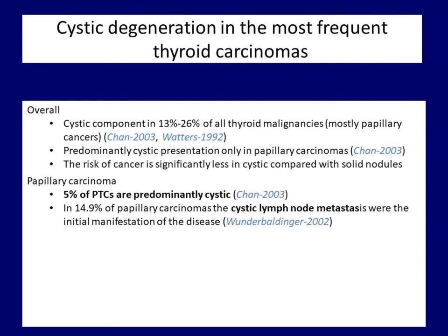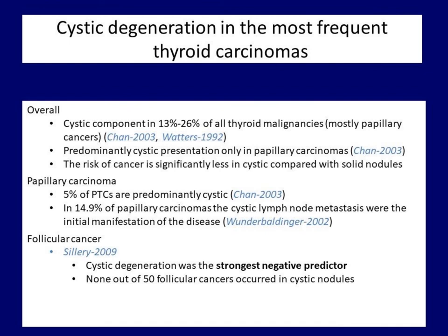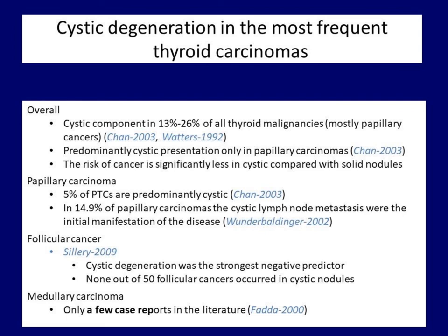Papillary cancer is the subtype we should consider in cystic nodules. Regarding follicular cancer, cystic degeneration proved to be the strongest negative predictor in follicular tumors — a very important finding neglected in everyday practice, especially given that we cannot differentiate benign and malignant forms of follicular tumors. The ultrasound presentation of medullary cancer is very similar to that of papillary carcinoma; however, in contrast with papillary cancers, cystic component is observed much less frequently in medullary cancers.